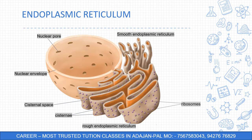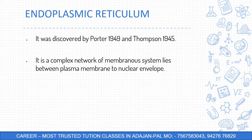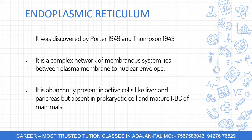The endoplasmic reticulum was discovered by Porter in 1949 and Thompson in 1955. It is a complex network of membranous system lying between the plasma membrane and nuclear membrane. This membranous structure starts from the nuclear envelope and extends in folded form up to the plasma membrane. It is abundantly present in active cells like liver cells and pancreas, but is absent in prokaryotic cells and mature RBCs of mammals.